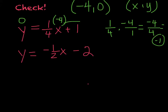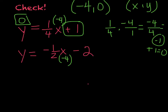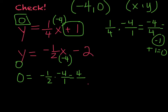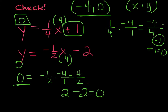Then it says plus one, which gives zero — which is what I wanted. Now let's plug negative four in for x and zero for y in the second equation. I have zero equals negative one-half times negative four over one. A negative times a negative is a positive four over two. Four divided by two is two, minus two — that is zero. So that solution worked in both equations.